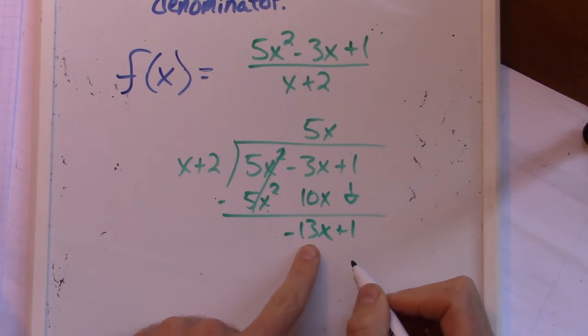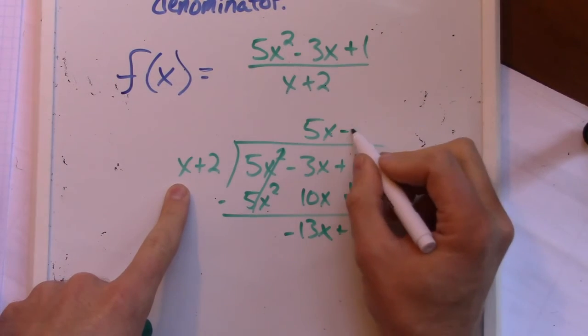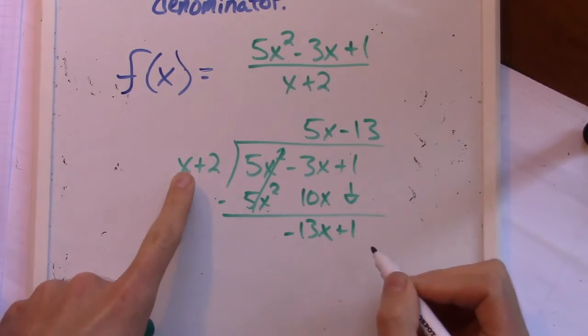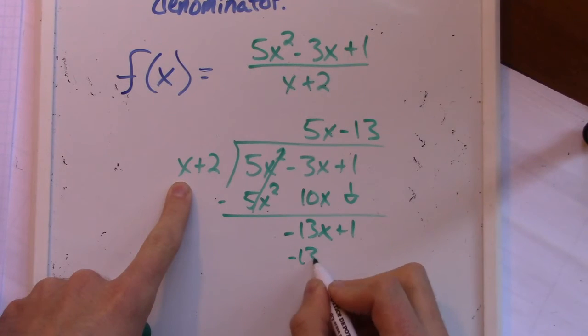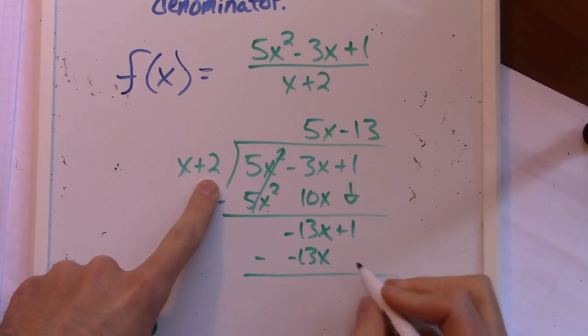So now I need to get the negative 13x and I've got an x. So how do I get negative 13x from x? Minus 13. Negative 13 times x is negative 13x. Those match, that's good. When I subtract, they'll cancel. Negative 13 times 2, that's negative 26.